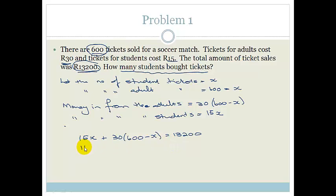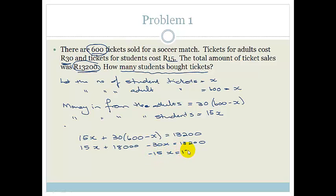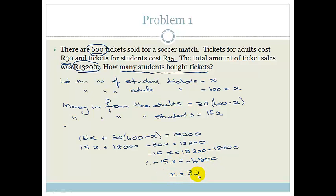If we multiply this out, we get 15X plus 18,000 minus 30X equals 13,200. Grouping the X terms: minus 15X equals 13,200 minus 18,000, which gives minus 15X equals minus 4,800. Dividing both sides by negative 15, we get X equals 320. So we can see that 320 students bought tickets.